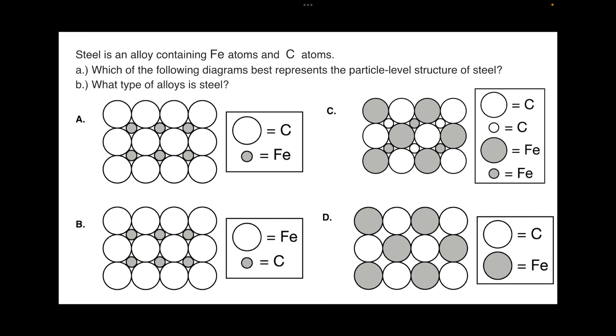Here's an example of a question you might find on the AP exam related to alloys. So steel is an alloy, as we just said, containing iron and carbon. Which of the following diagrams best represents the particle level structure of steel, and what type of alloy is steel? Pause the video here and answer these questions. When you come back, we'll discuss the answer.